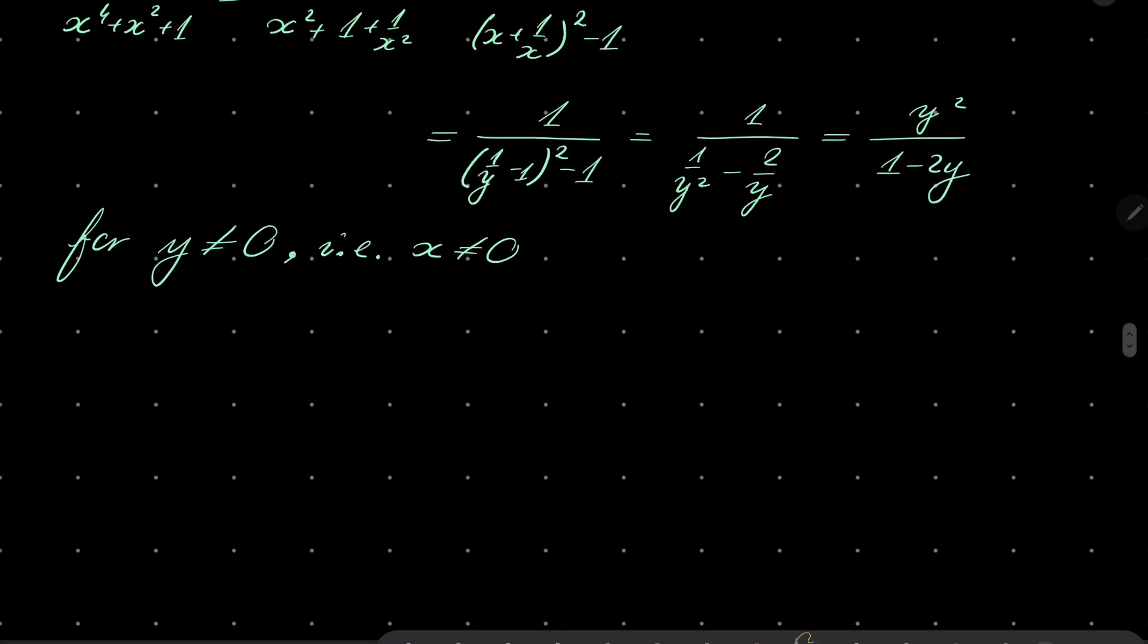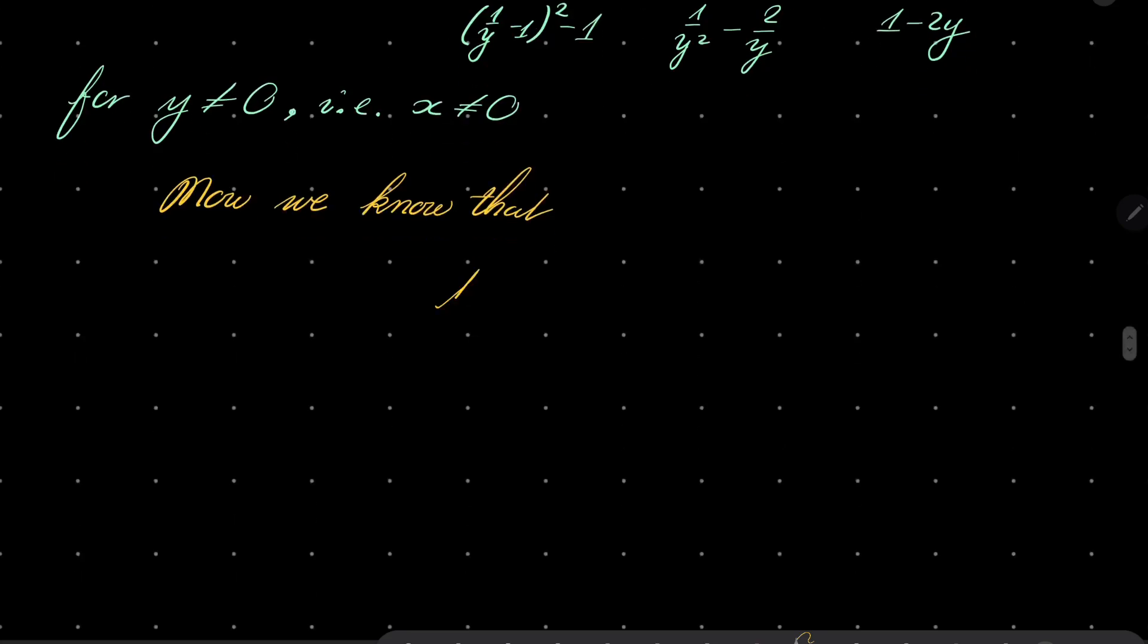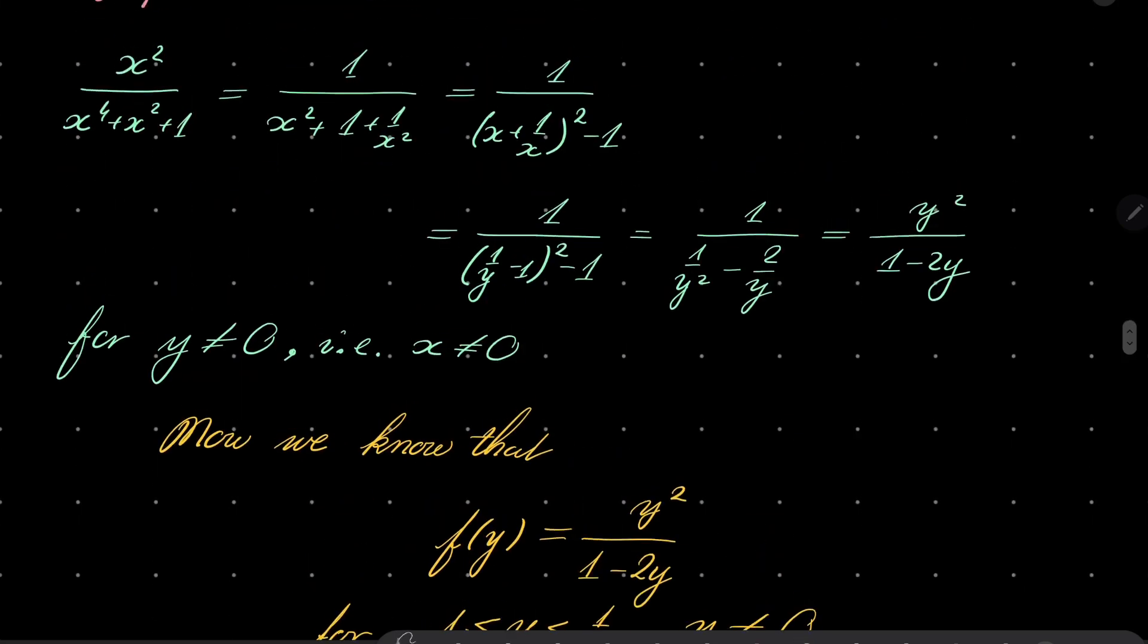Now we know that f of y is y squared over 1 minus 2 times y, for real numbers y greater than or equal minus 1, less than or equal 1 third, which are not 0.